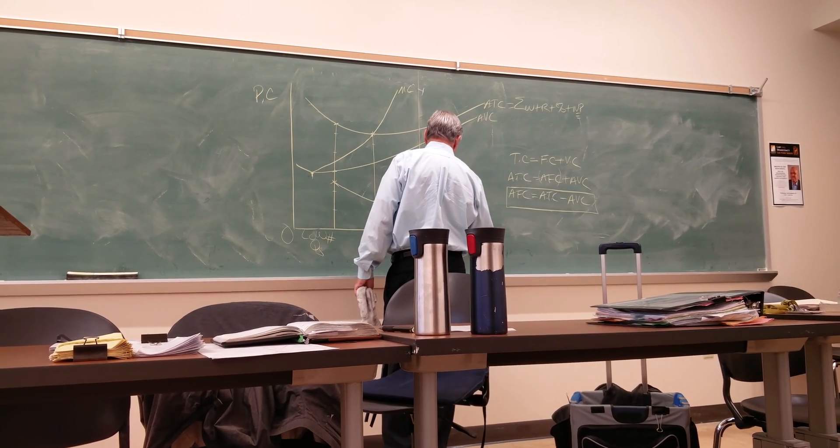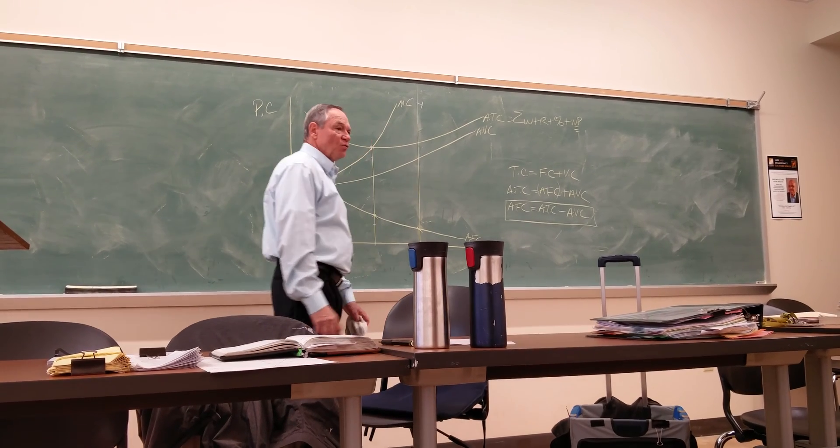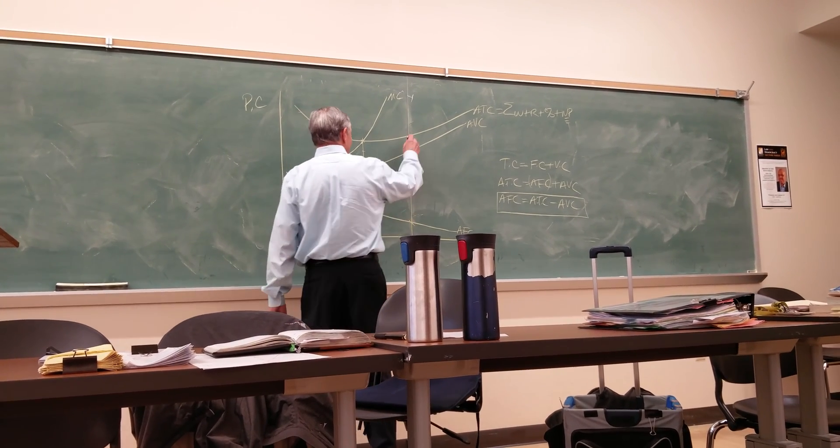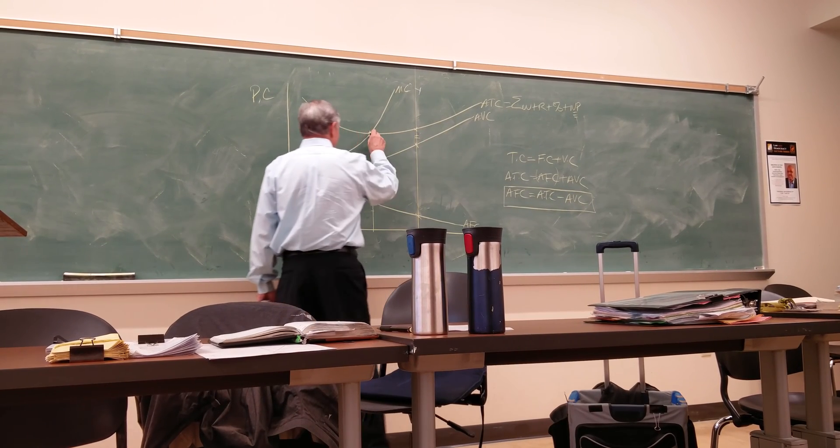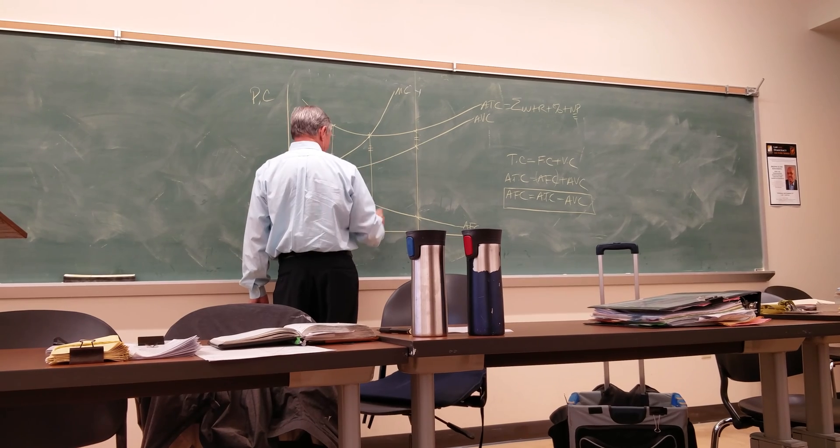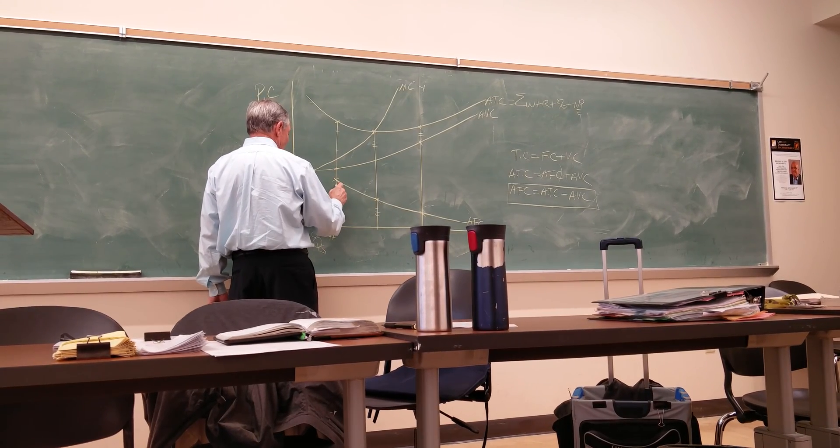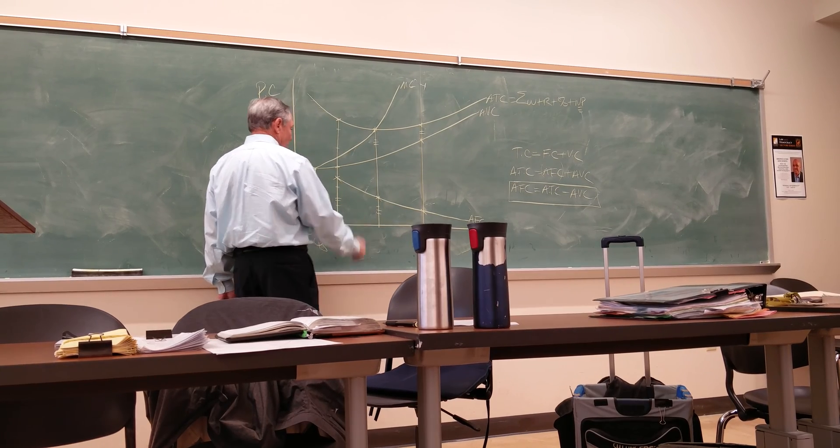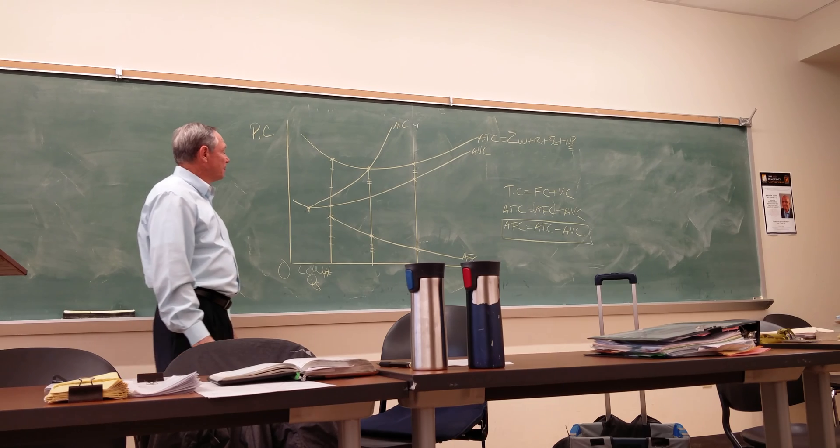We'll call that average fixed cost. Now, when you get graded and you come see me, I'll bring a ruler out, and I will measure these differences. Here to here must match that. From here to here must match this. And from here to here must match this height also. And if you've done that correctly, those three areas, you get full credit.